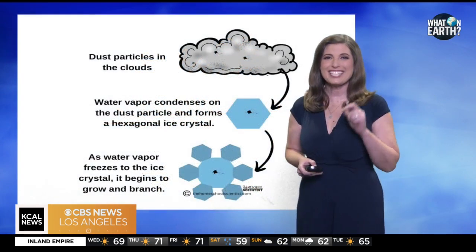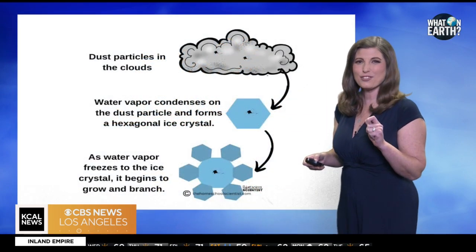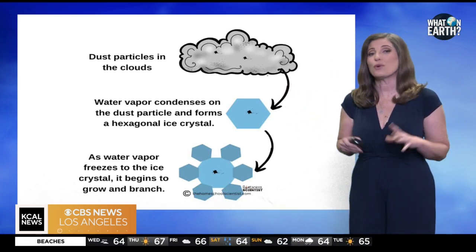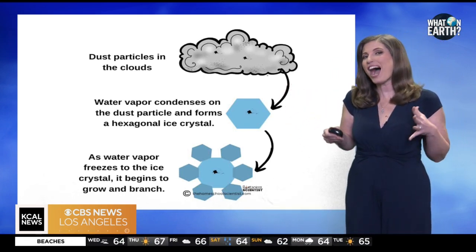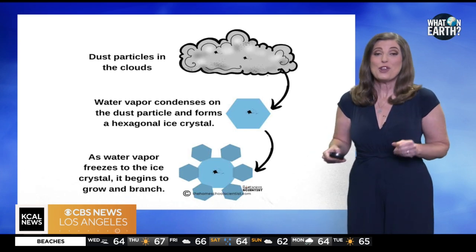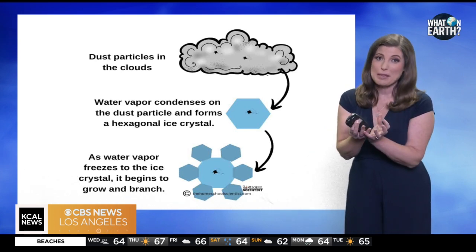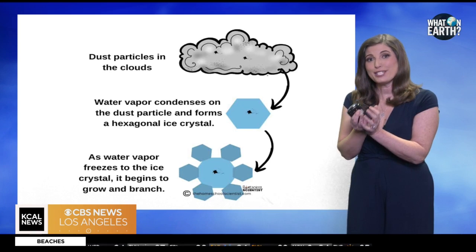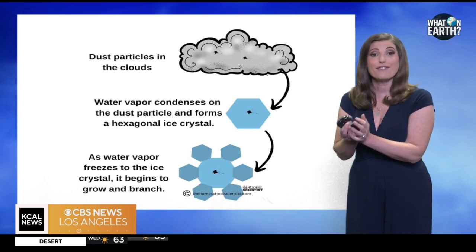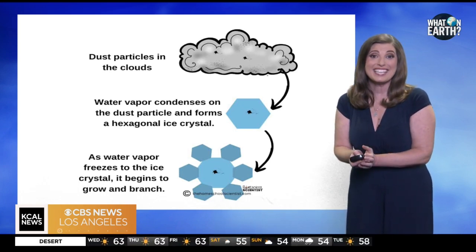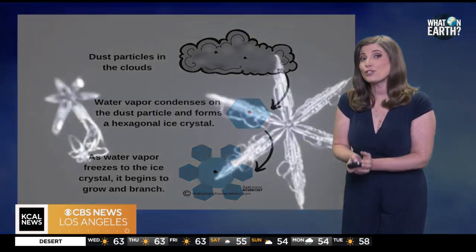A snowflake begins when a tiny dust or pollen particle comes into contact with water vapor high in the Earth's atmosphere. The water vapor coats the tiny particle and freezes into a tiny crystal of ice. This tiny crystal will be the seed from which a snowflake will grow.